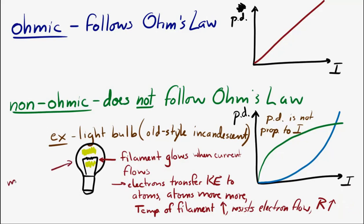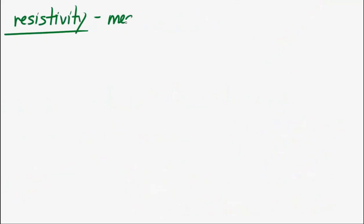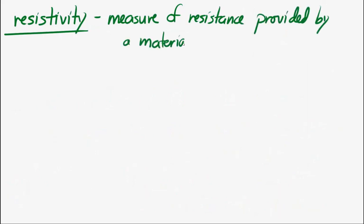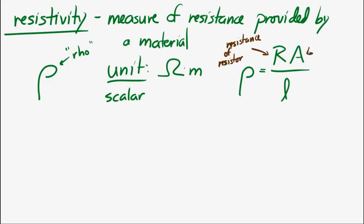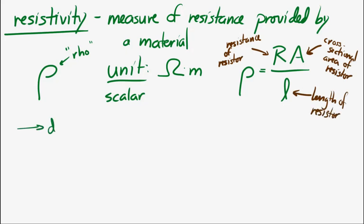We're going to talk about another quantity called resistivity. Resistivity is a quantity which measures the resistance provided by a material. It's given the symbol rho, which looks like a P but without the little thing sticking up. The unit is the ohm-meter. Resistivity equals the resistance of a resistor times the cross-sectional area of the resistor, divided by the length of the resistor. Resistivity is dependent upon the material and the material alone.